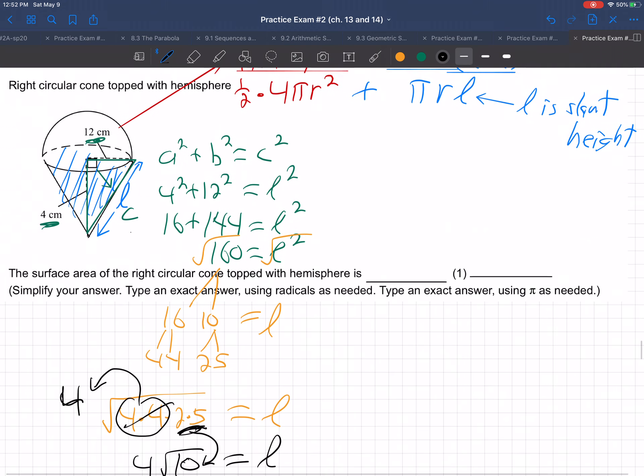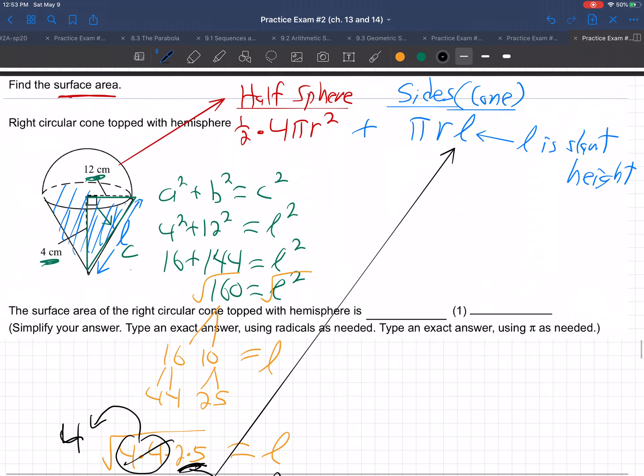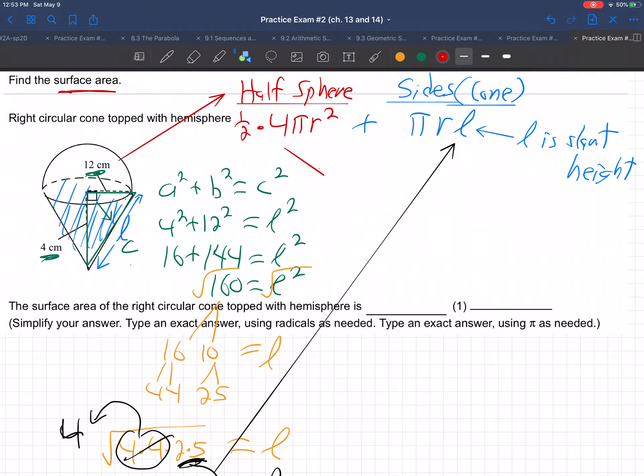So now let's take that slant height of there and use it. So now, putting this problem together, we have, let me bring this over here. We have 1/2 times 4 times π times r. What's the r? From the middle to the edge of the circle, the r, right there's the 12. 12² plus,